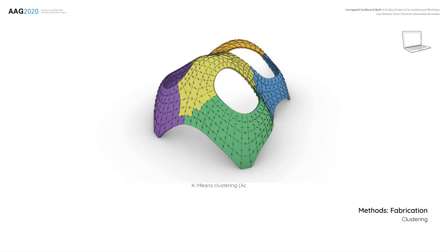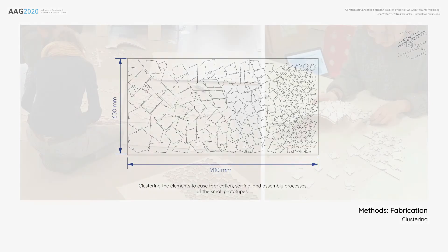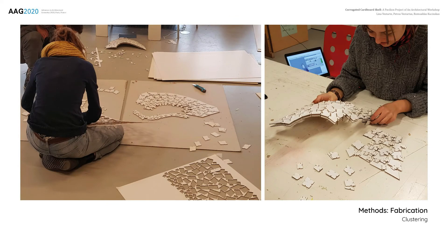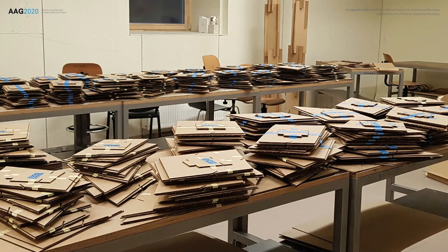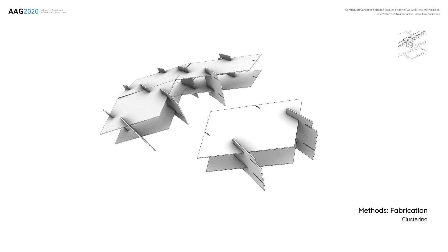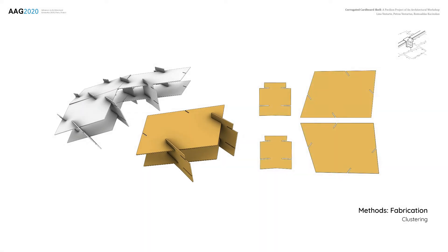In the initial prototyping phase, panels were grouped into a few clusters to ease fabrication, sorting, and assembly processes, affording the division of work among students. The clusters were assembled in parallel and later joined with multiple elements at once. For the pavilion structure, grouping strategies were utilized to group panels only with their associated connecting elements. These small sets of few items were created to speed up sorting processes when preparing for fabrication.